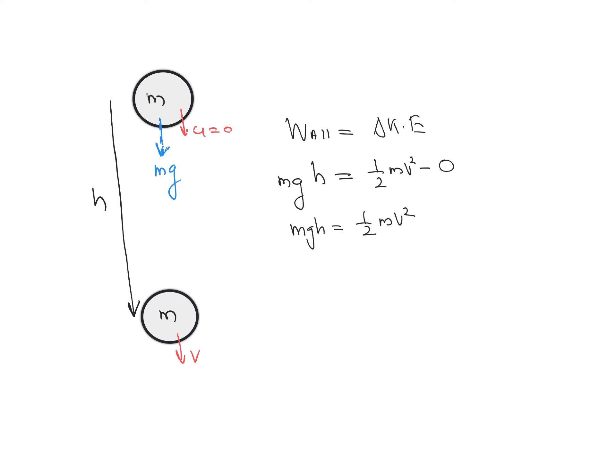From this relation we can find the value of velocity. Now using the alternate form of the Work-Energy Theorem: W_non-conservative = ΔKE + ΔPE. Here, gravitational force is a conservative force and no other forces are acting, so work done by non-conservative forces is zero.